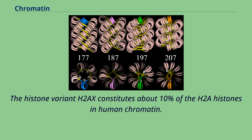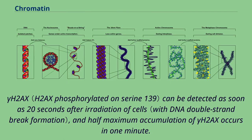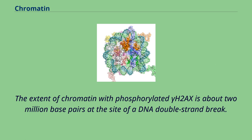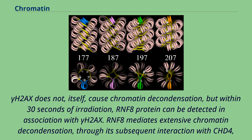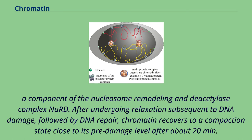The histone variant H2AX constitutes about 10% of the H2A histones in human chromatin. Gamma-H2AX can be detected as soon as 20 seconds after irradiation of cells, and half-maximum accumulation of gamma-H2AX occurs in one minute. The extent of chromatin with phosphorylated gamma-H2AX is about 2 million base pairs at the site of a DNA double-strand break. Gamma-H2AX does not itself cause chromatin decondensation, but within 30 seconds of irradiation, RNF8 protein can be detected in association with gamma-H2AX. RNF8 mediates extensive chromatin decondensation through its subsequent interaction with CHD4, a component of the nucleosome remodeling and deacetylase complex NuRD. After undergoing relaxation subsequent to DNA damage, followed by DNA repair, chromatin recovers to a compaction state close to its pre-damage level after about 20 minutes.